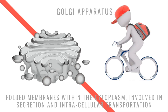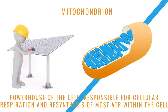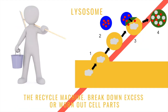We have the mitochondria — mitochondrion is singular, mitochondria is plural, though we normally refer to them in the plural. As we all know, it's the powerhouse of the cell, but more importantly it's responsible for cellular respiration and the re-synthesis of ATP within the cell. Lysosomes are the recycling machines: when catabolic and anabolic reactions take place within the mitochondria, lysosomes pick up excess and worn-out cell parts and allow them to be reused for future protein synthesis.